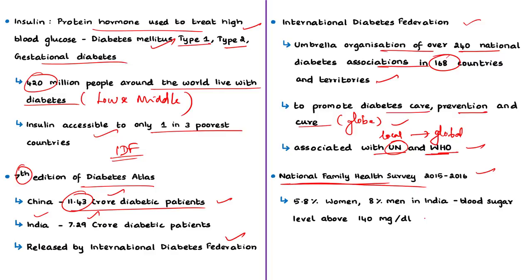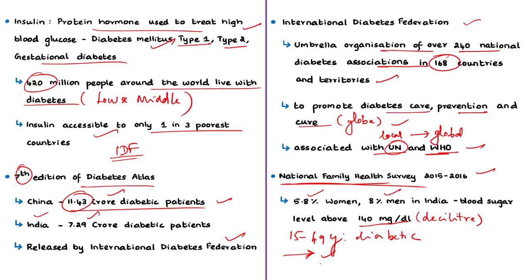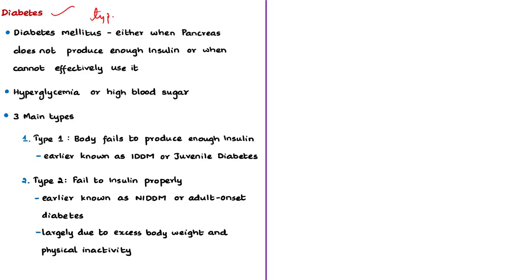The National Family Health Survey of 2015–16 states that about 5.8% of women and about 8% of men in India have blood sugar levels above 140 mg/dL in the age group of 15 to 49 years, indicating a significant portion of Indian youth and middle-aged population is diabetic. Blood glucose is the main source of energy for our body, and insulin helps the glucose from food get into our cells for energy generation.